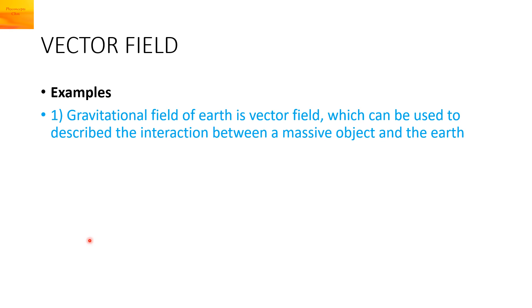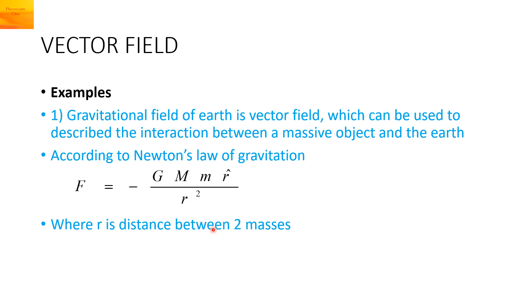Examples can be the gravitational field which represents the interaction between a massive object and the earth like the force between the earth and the moon. We know Newton's law of gravitation, f bar is equal to minus GMm into r cap upon r square where r is the distance between the two masses. The gravitational field can be represented by magnitude as well as direction.